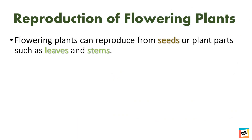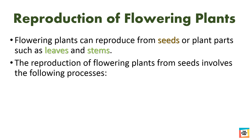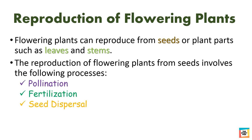Flowering plants can reproduce from seeds or plant parts such as leaves and stems. The reproduction of flowering plants from seeds involves the following processes: pollination, fertilization, seed dispersal, and germination.